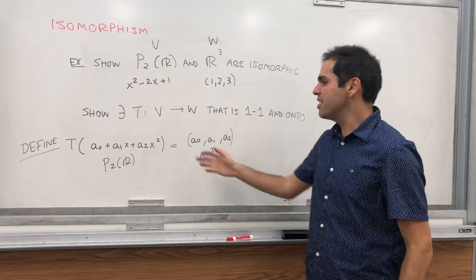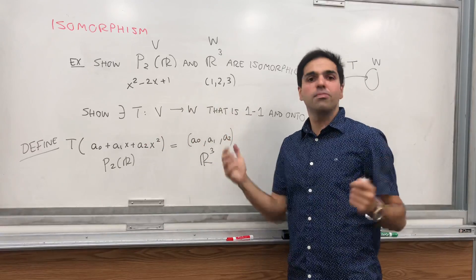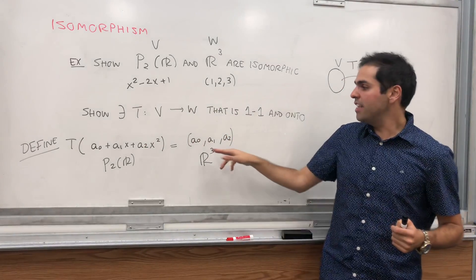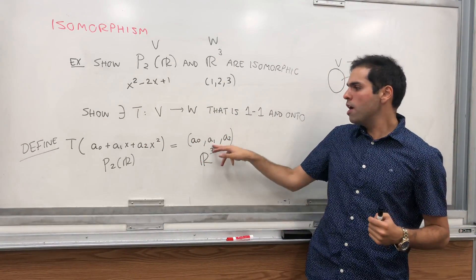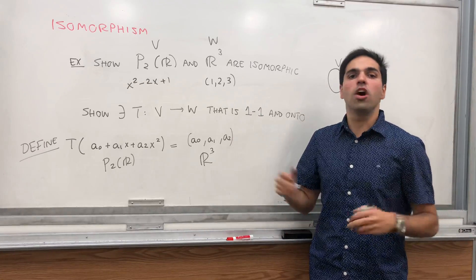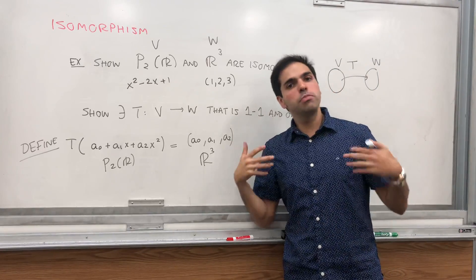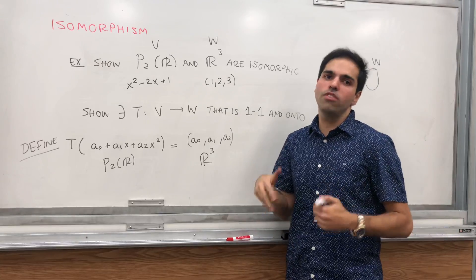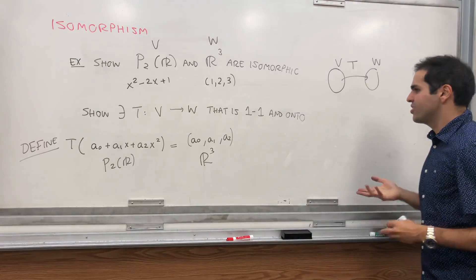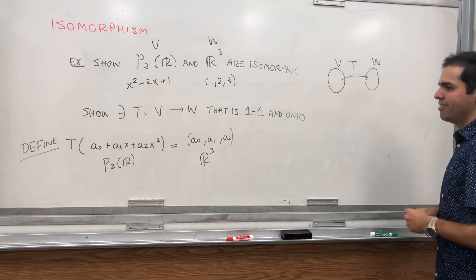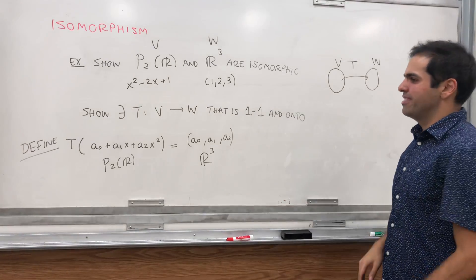You could also have, if you like physics, T takes a polynomial as its input and spits out P of 0, P prime of 0, and P double prime of 0, which would be the initial position, initial velocity, and initial acceleration. But here, let's just keep it simple.